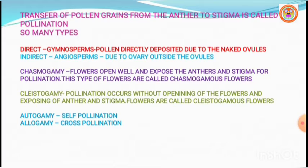The event of pollination is the characteristic feature of seed-producing plants called spermatophytes. Gymnosperms and angiosperms are spermatophytes where pollination is the characteristic feature. Pollination in gymnosperms is called direct pollination because the pollen is deposited directly on the exposed ovules, since gymnosperms are naked-ovule plants. Whereas in angiosperms, which are closed seed-producing plants, the pollination is indirect — pollen grains are deposited on the stigma of the pistil.